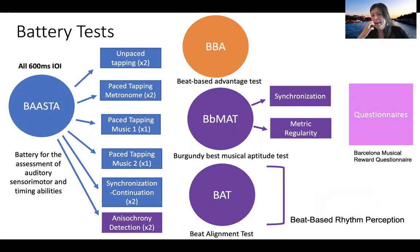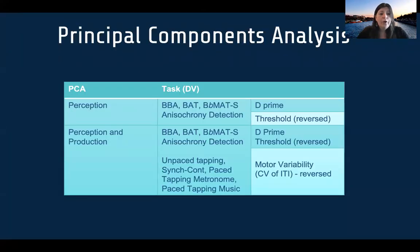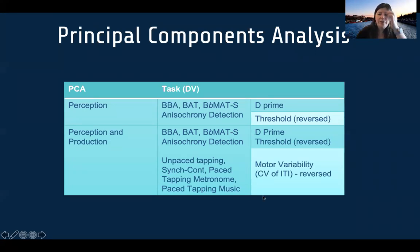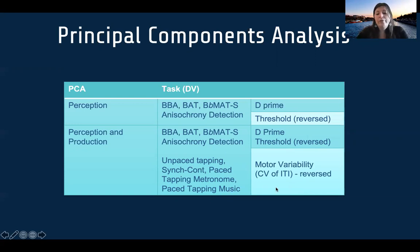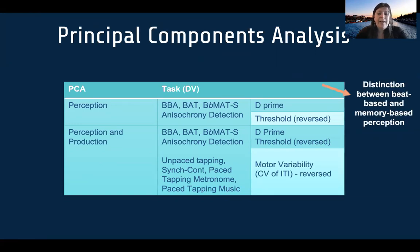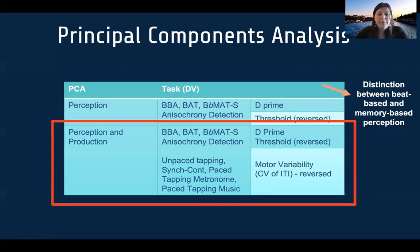We also ran questionnaires including the Barcelona Musical Reward Questionnaire. We ran both a perception-only and a perception-and-production PCA, but I'll focus on the perception-and-production analysis. For the perception measures — the BBA, the BAT, and the BMAT sync — we used d-prime (D'), a measure of sensitivity to the signal where higher scores are better. For anisochrony detection, we used the threshold of change detection, and all values were reversed where necessary so that higher values always indicate better performance. For the production tasks, we used the coefficient of variation of the inter-tap interval as a measure of motor variability. In the perception-only PCA, we did find a distinction between beat-based and memory-based perception tasks.